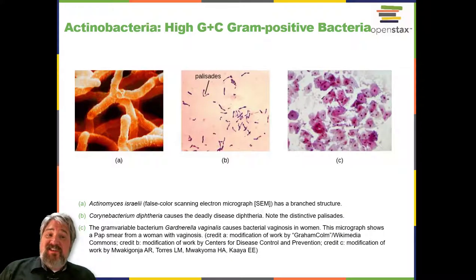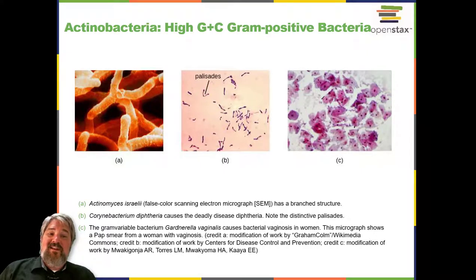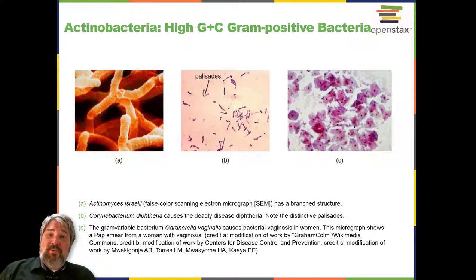Actinobacteria: high-GC Gram-positive bacteria. The name actinobacteria comes from the Greek words for rays and small rod, but actinobacteria are very diverse. Their microscopic appearance can range from thin filamentous branching rods to coccobacilli. Some actinobacteria are very large and complex, whereas others are among the smallest independently living organisms. Most actinobacteria live in the soil, but some are aquatic, and the vast majority are aerobic. One distinctive feature of this group is the presence of several different peptidoglycans in the cell wall.